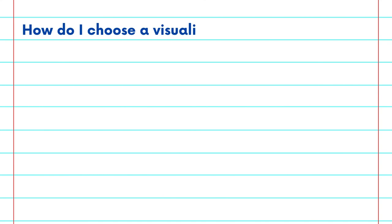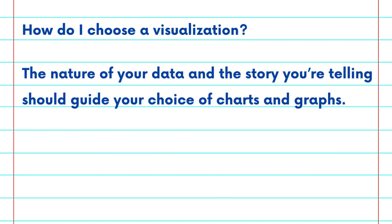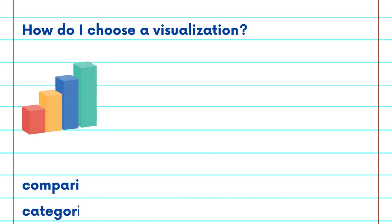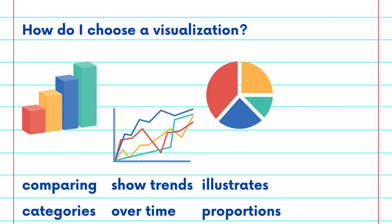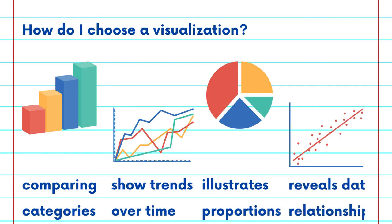Now onto a crucial aspect: selecting the right visualization. The nature of your data and the story you are telling should guide your choice of charts and graphs. For example, bar charts are great for comparing categories, line graphs excel in showing trends over time, pie charts are useful for illustrating proportions, and scatter plots can reveal relationships between variables.